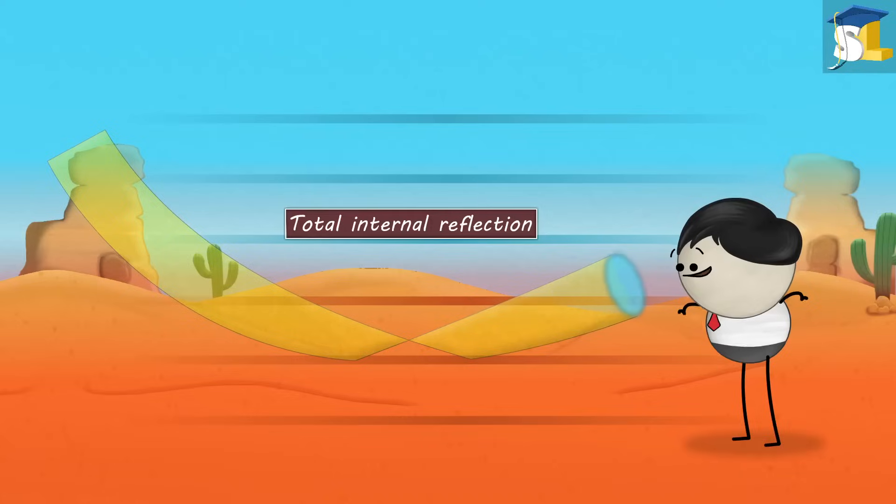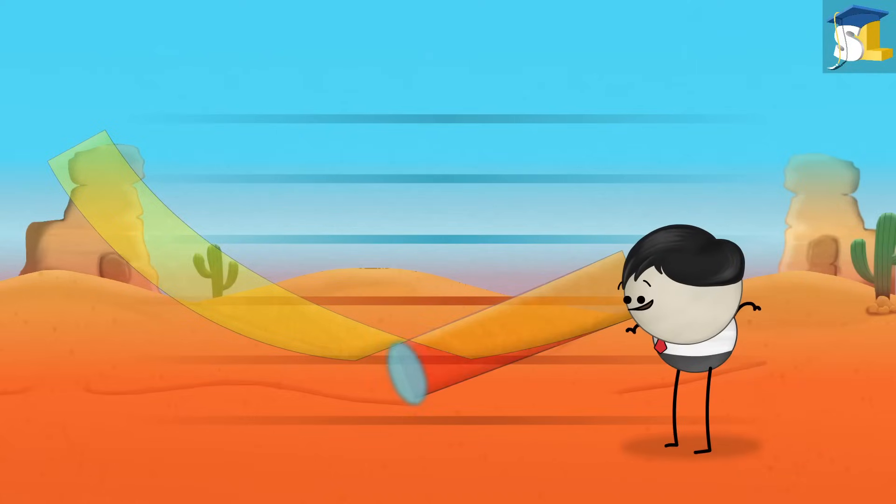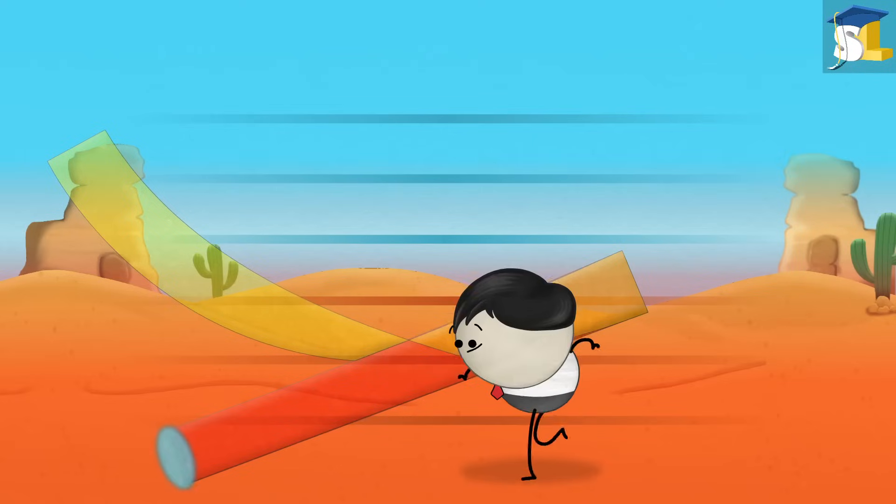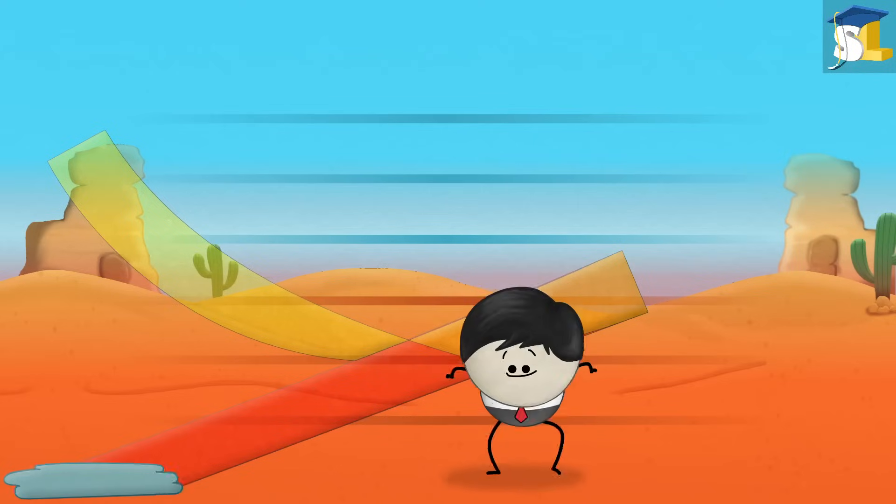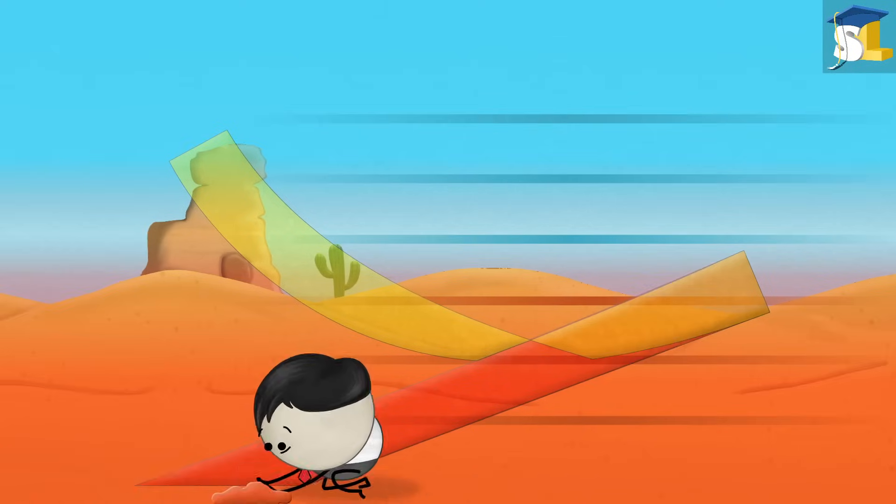When this reflected light reaches our eyes, our eyes trace it backward as a straight line. Hence, the reflection of blue sky appears on the ground and our brain thinks that there is water, thus causing a mirage.